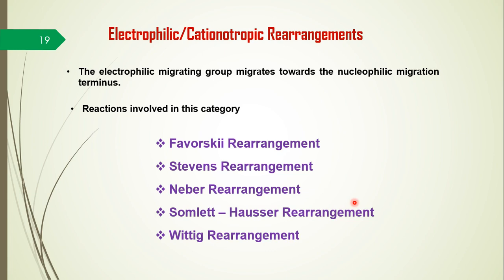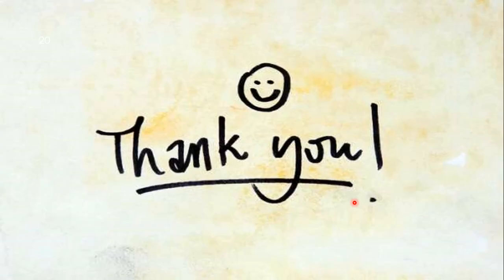In conclusion, in this video we understood the definition of molecular rearrangements, the types of molecular rearrangements, and different categories based on where bond breakage between the migrating group and migration origin takes place. We observed different kinds of molecular rearrangements with their examples. Thank you for your patience.